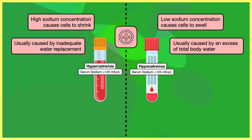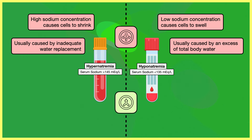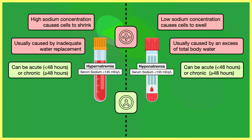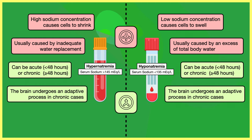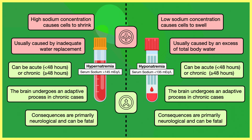There are fundamental characteristics that make these conditions very different from each other. Nevertheless, as we go through hyponatremia, we'll also see there are some similarities. Both can be classified as acute or chronic, with 48 hours as the timeframe used for delineation. The brain undergoes an adaptive process in chronic cases that lowers the risk of consequences but makes treatment more complicated. The consequences are primarily neurological, with the most severe cases resulting in seizures, neurological damage, or death.